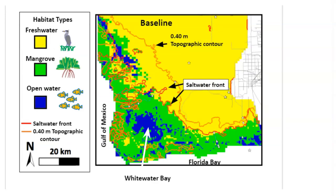We also looked at shifts in habitat. The baseline condition is similar to today, with a broad freshwater marsh shown in yellow, a mangrove fringe shown in green, and open water shown in blue, really only in Whitewater Bay and scattered ponds among the mangroves.